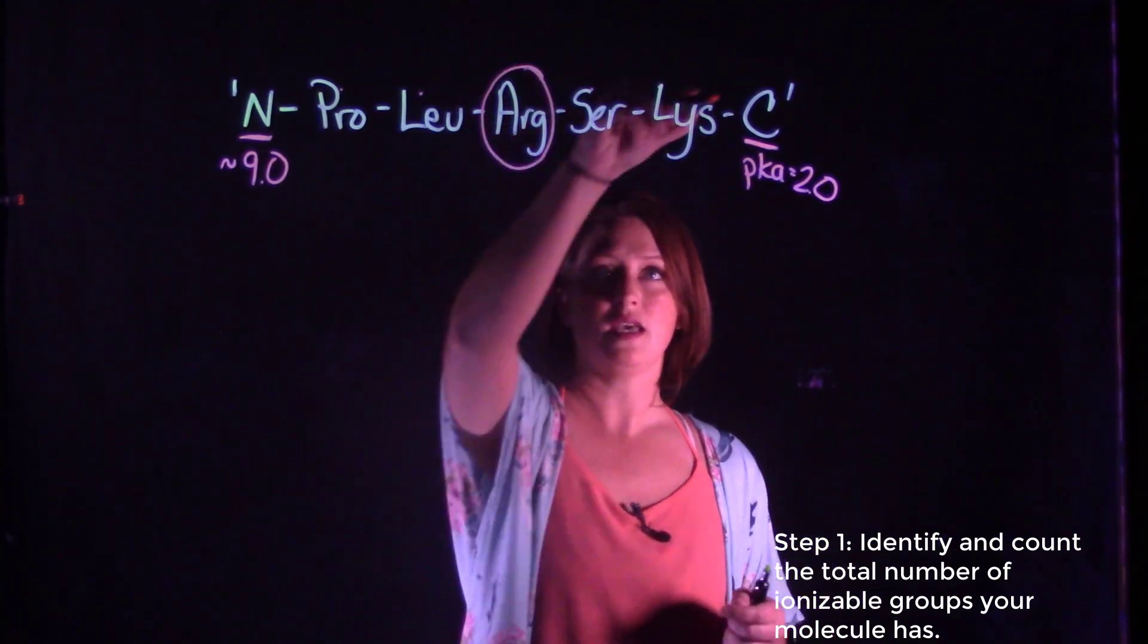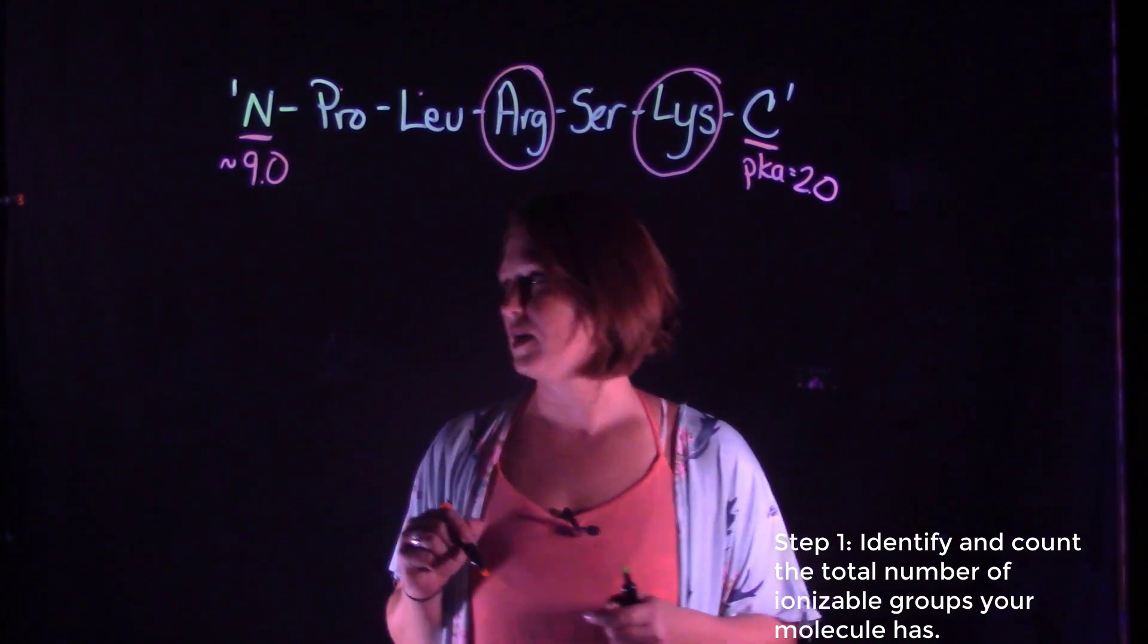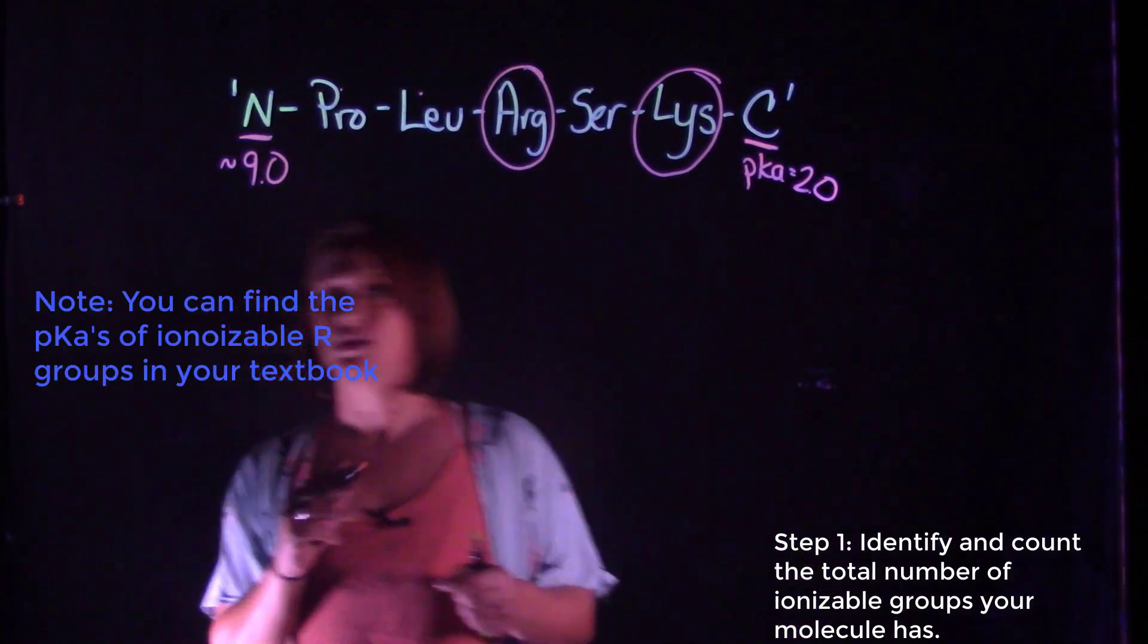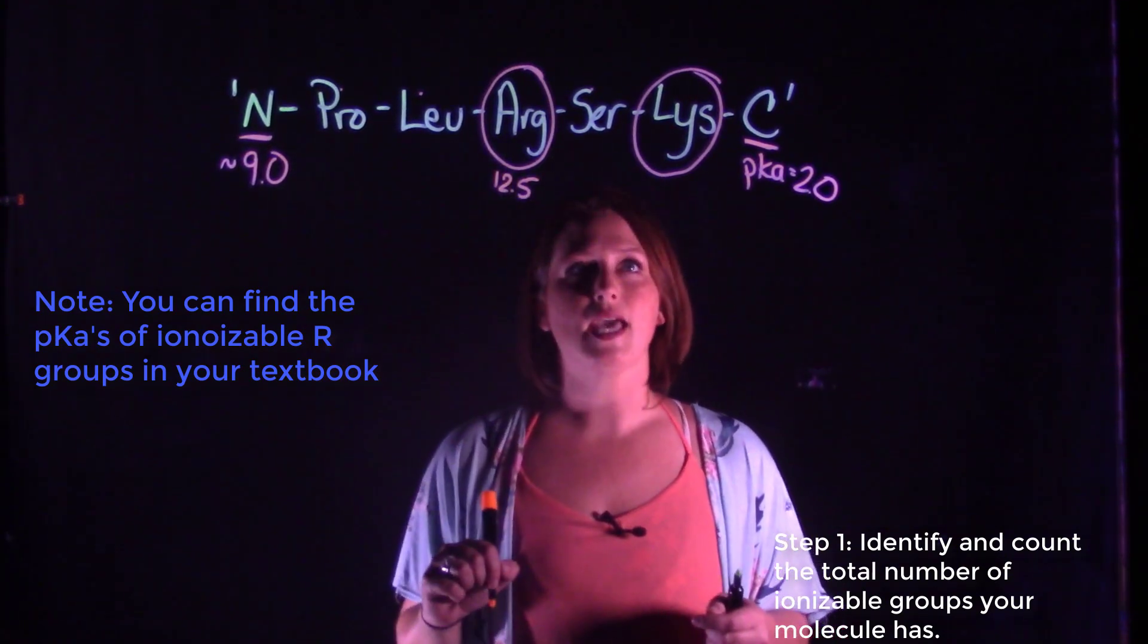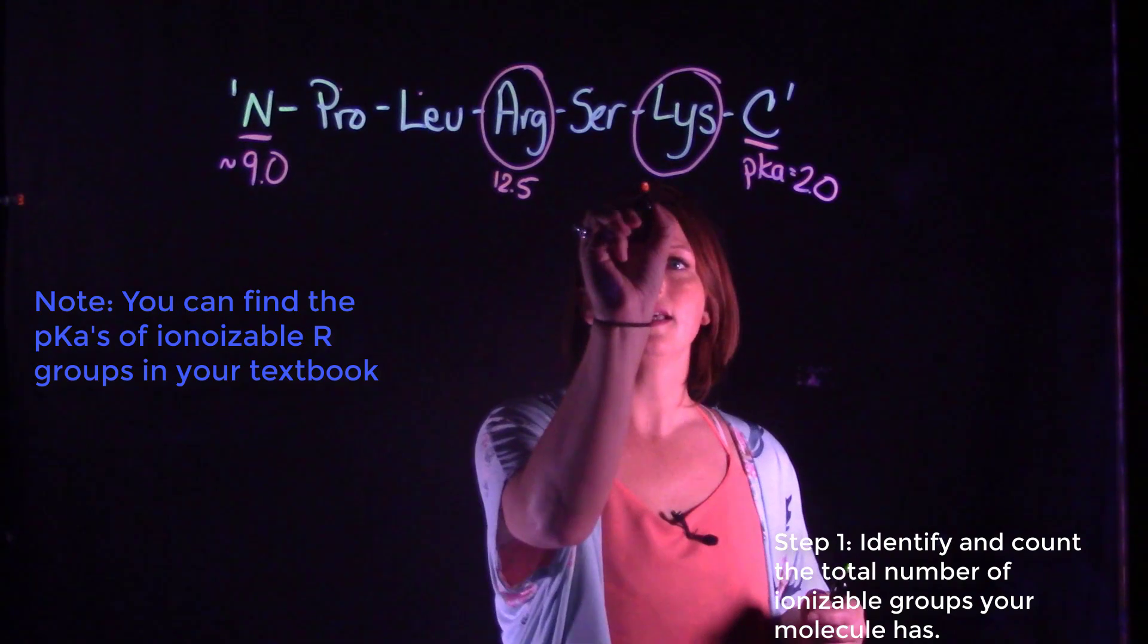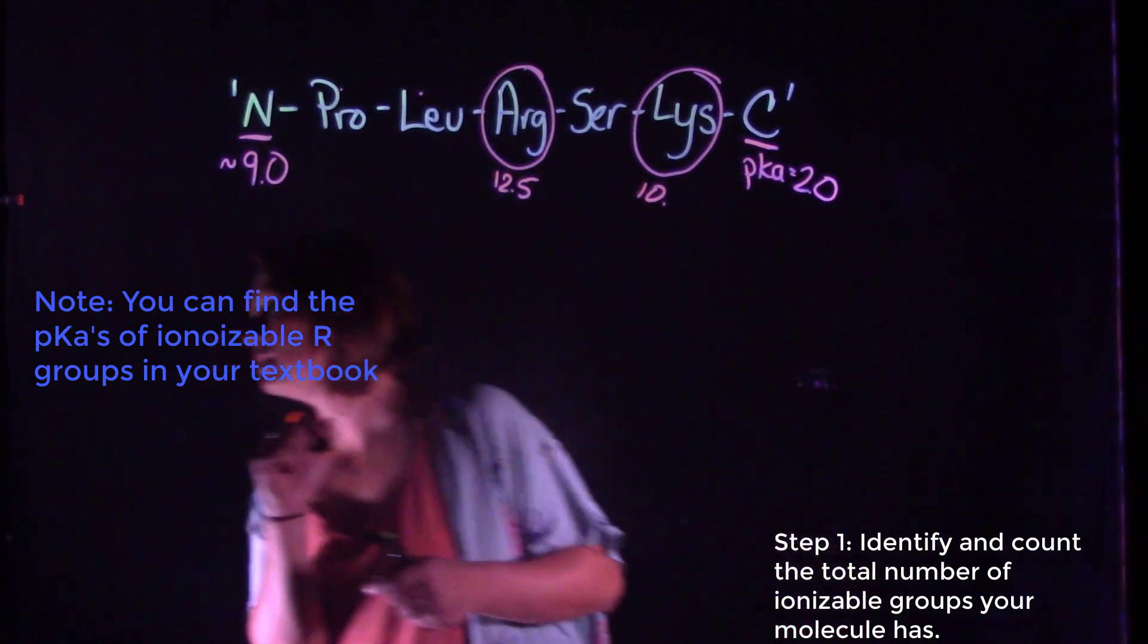The only groups that have ionizable R groups are going to be our acidic or our basic amino acids such as arginine and lysine. The pKa for the R group in arginine is going to be 12.5, while the pKa for lysine is effectively 10.5.